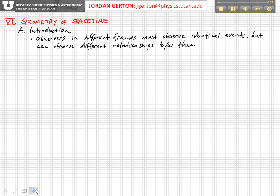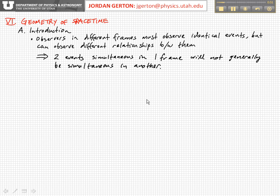We talked about before that observers in different inertial reference frames must all agree on the events that occur, but they can observe different relationships between them. For example, two events that are simultaneous in one reference frame will not generally be simultaneous in any other reference frame. This is the relativity of simultaneity that we've discussed before — one of the consequences of special relativity.